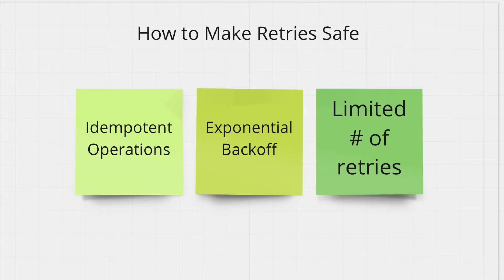The other thing you should keep in mind is exponential backoff. That means the first time you try and wait five seconds, then try again — the next time you retry, you should wait longer before trying again. With every successive retry, you want to wait longer and longer to give service B a chance to start working again, instead of just spamming service B with retries after retries.